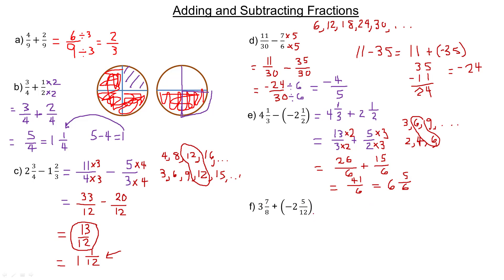Last one here: three and seven-eighths minus two and five-twelfths. Adding a negative is the same as just subtracting. Let's change into improper fractions first. Three times eight is 24, and if you add seven to that, that's 31. So this would be 31 eighths.